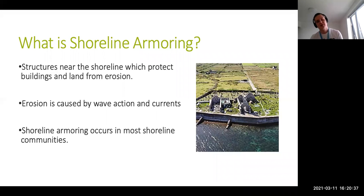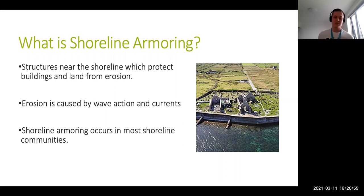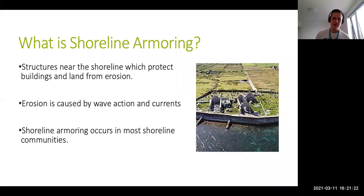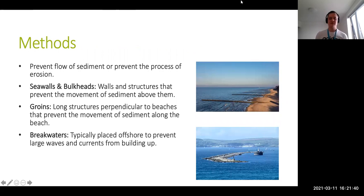Shoreline armoring is the process of constructing buildings close to the shoreline that prevents erosion and protects the land and buildings above it. Erosion is a natural process caused by wave action, currents, and wind that degrades coarse sediments into finer ones and displaces them. Shoreline armoring occurs in most shoreline communities to stabilize building foundations. Here you can see a picture of a seawall, which is a form of shoreline armoring that prevents the ground above it from moving or being displaced.